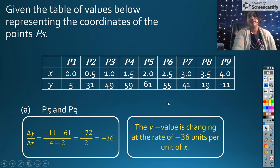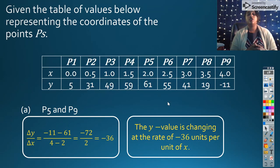I simplify down and I get negative 36. And we can interpret that as a sentence. Our literature sentence there would be, the y value is changing at a rate of negative 36 units per unit of x.